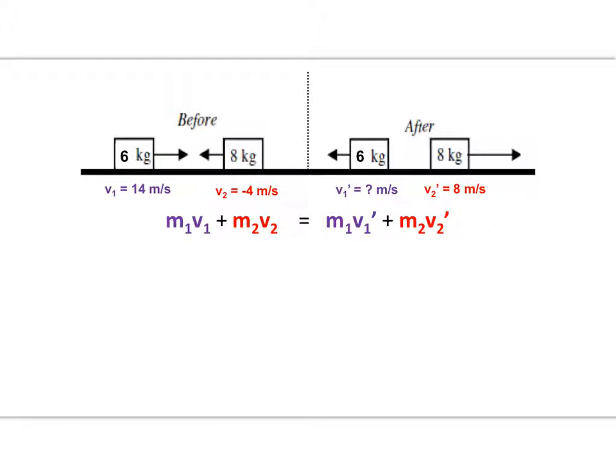So the first thing that you need to do is to just plug in all your variables. You know the mass and the velocity of object number one, six kilograms and 14 meters per second. You know the mass and velocity of object two before the collision, eight kilograms and negative four meters per second. That negative is really important.